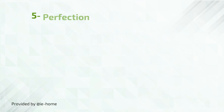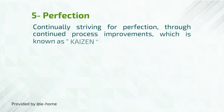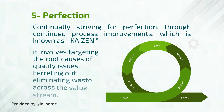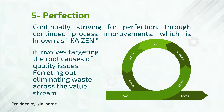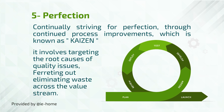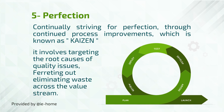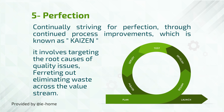Principle 5: Perfection. Continually striving for perfection through continued process improvements, known as Kaizen. It involves targeting the root causes of quality issues and ferreting out and eliminating waste across the value stream.